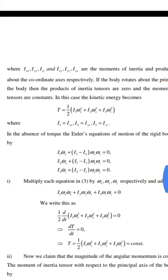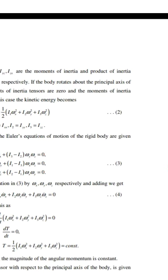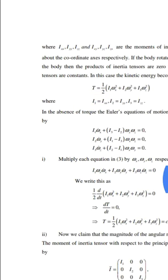In this case, the kinetic energy becomes T = 1/2 (I₁·ωx² + I₂·ωy² + I₃·ωz²), where I₁ = Ixx, I₂ = Iyy, and I₃ = Izz.